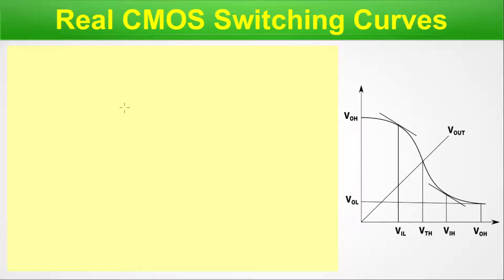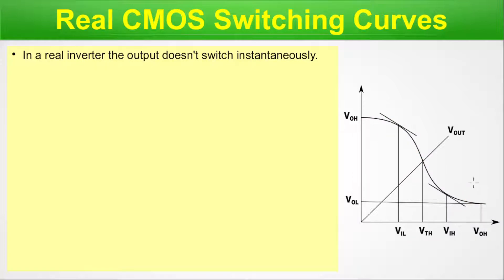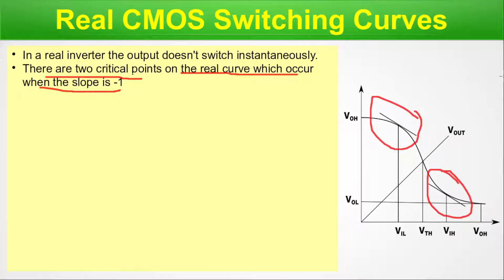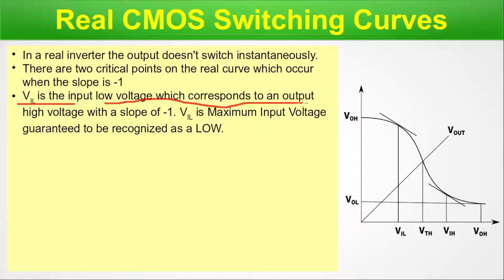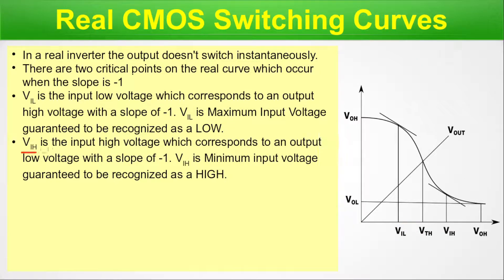Now, the real CMOS switching curves. In a real inverter the output does not switch instantaneously — it takes some time, however small. There are two critical points on the real curve which occur when the slope is minus one. VIL is the input low voltage which corresponds to an output high voltage of slope minus one — VIL is the maximum input voltage guaranteed to be recognized as low. VIH is the input voltage which corresponds to an output low voltage of slope minus one — VIH is the minimum input voltage guaranteed to be recognized as high.